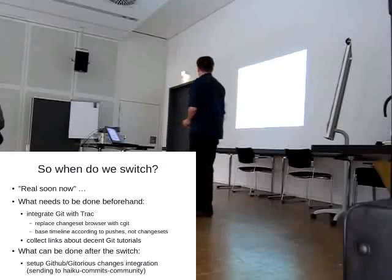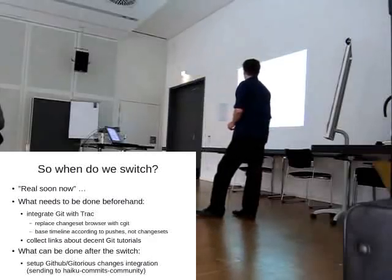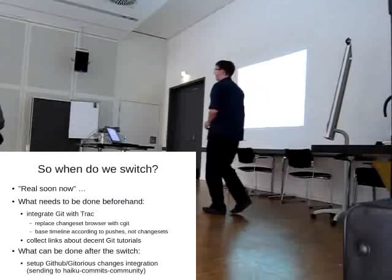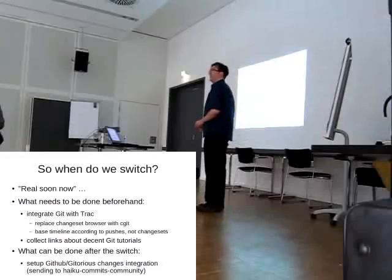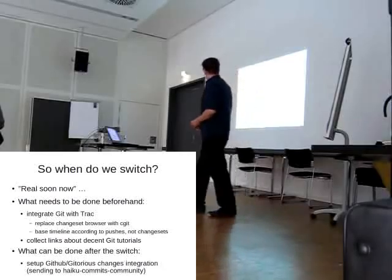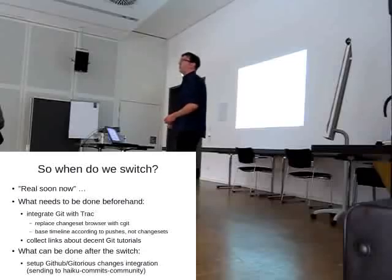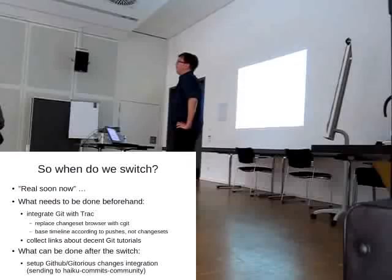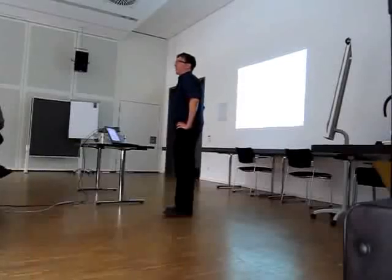It would be better to base the timeline on the pushes and all the changesets that came in with that push, so you can see the feature branch and what it contained. We'd have to find out how that can be done — it shouldn't be too difficult, but there's some magic in the timing. The other thing I need to do is collect information about DCP tutorials, because it's a new tool. Many people have already complained about it, and there's a simple tutorial that I can provide.